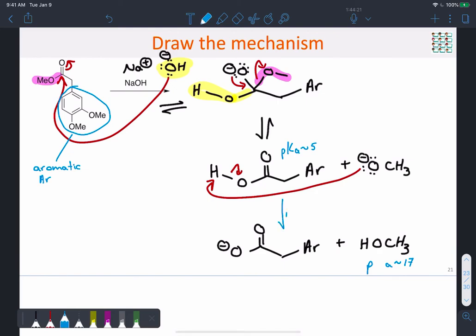This reaction's common name is a saponification reaction. It's used to make soaps out of fats because the ester is a common functional group in fats.